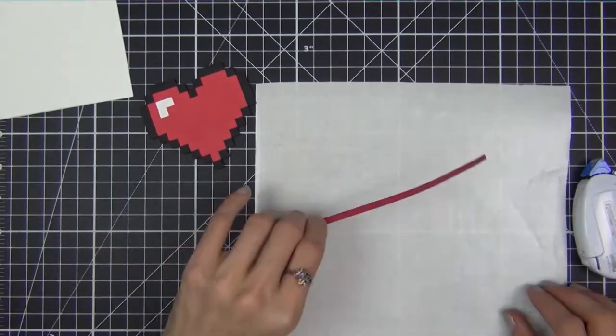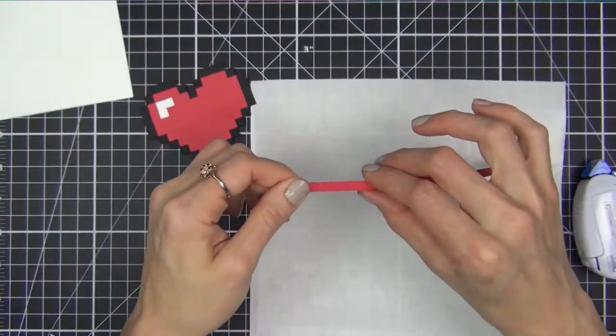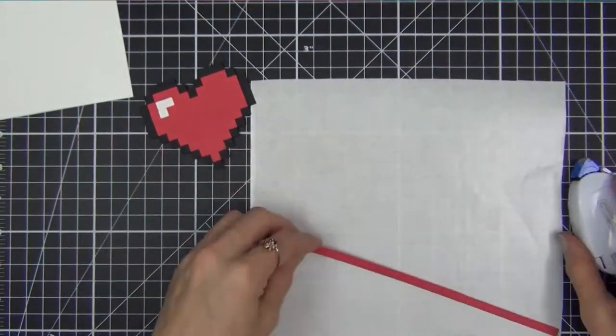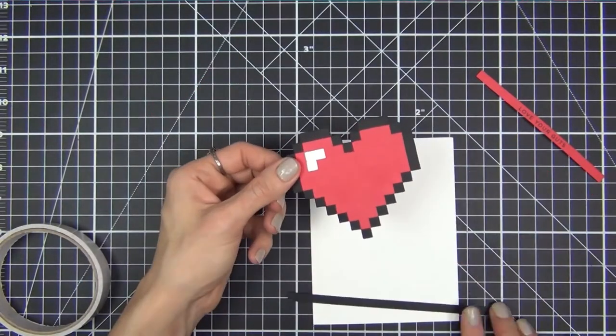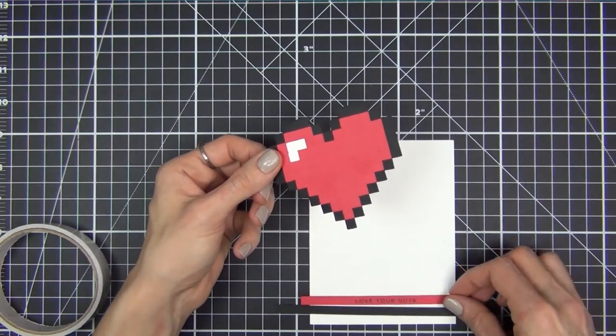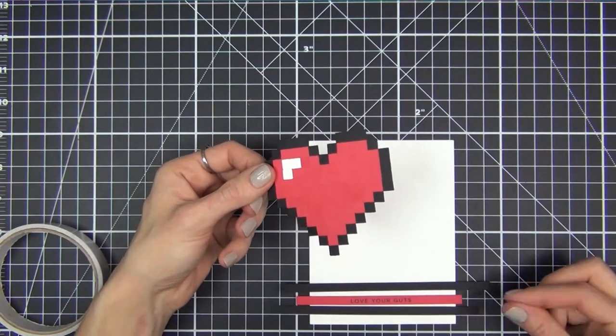Once it's all stamped I go ahead and layer three strips of red cardstock to add some subtle dimension. I use my tape runner but double sided tape would also work. I add some black strips as well but I keep them as a single layer.